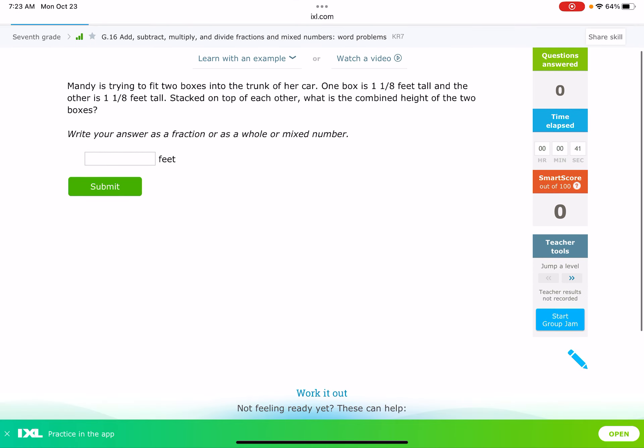The first example here, Mandy is trying to fit two boxes into the trunk of her car. One box is 1⅛ feet tall, and the other is 1⅛ feet tall. Stacked on top of each other, what is the combined height of the two boxes? The first thing you have to ask yourself is what operation are you doing. Some clue words here, we've got combined, and we've got stacked on top of each other. This tells us that we're going to add.